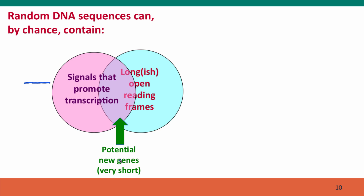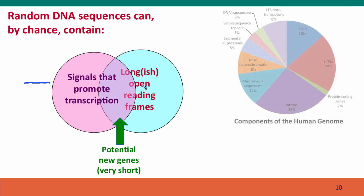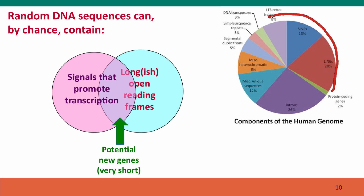Of course, these events are rare, but almost all of our genome consists of sequences that don't have any coding function. That means we have almost 3 billion sequences in each of our two copies of our genome — 3 billion sequences where such events can occur. So it's almost inevitable that at some places in the genome there will be, by chance, sequences that promote transcription and longish open reading frames adjacent to them. If these new genes are beneficial and the protein produced actually helps the cell, then natural selection can step in and select for additional genetic changes that make this new sequence more functional.